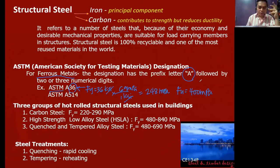For hot rolled structural steels, they are grouped into three. Carbon steel, high strength low alloy steel, and quenched and tempered alloy steel. Notice A36 steel has FY of 248, so it falls in the FY range of 220 to 290, making A36 a carbon steel. The second group has FY ranging from 480 to 840, so these have much higher yield strengths. The third group underwent quenching and tempering, which are steel treatments.